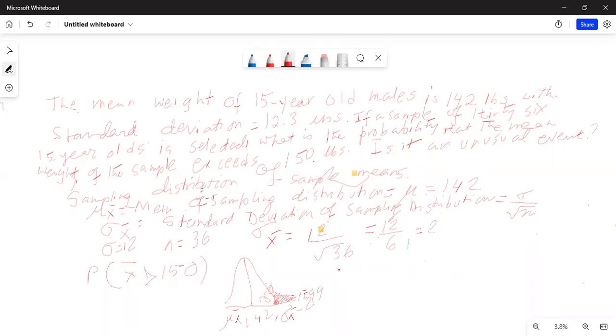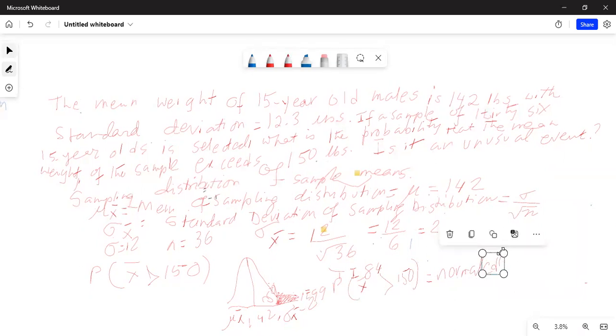So if you go to TI-84, this will be P x bar greater than 150 means on the right of 150 is equal to normal CDF, which is second key and then Vars key in TI-84. And it is normal CDF.